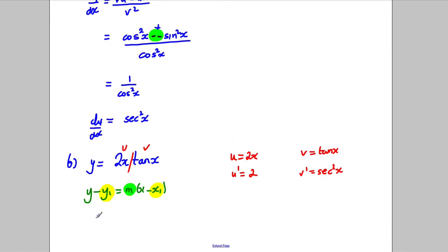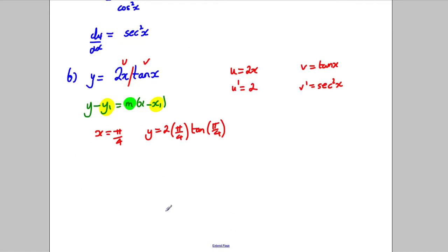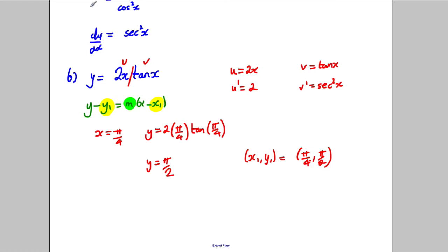Before finding the gradient, let's find the coordinate. Substituting x equals π/4 into y equals 2x tan x gives y equals 2 × (π/4) × tan(π/4), which equals π/2. So our coordinate (x₁, y₁) is (π/4, π/2).